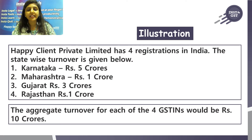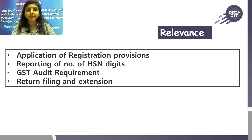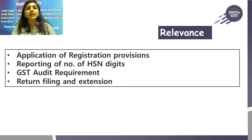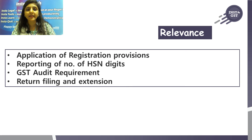This aggregate turnover is relevant in four major provisions. First, for registration: the threshold specified for GST registration requires consolidating aggregate turnovers. Second, for HSN digit reporting: up to ₹1.5 crores, no HSN compliance is needed; from ₹1.5 crores to ₹5 crores, 2-digit HSN compliance is required; and above ₹5 crores, 4-digit HSN compliance is required.